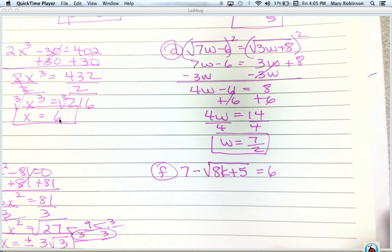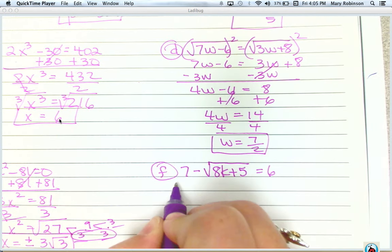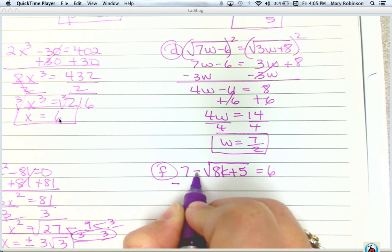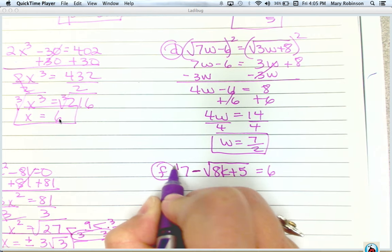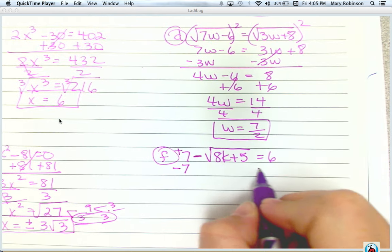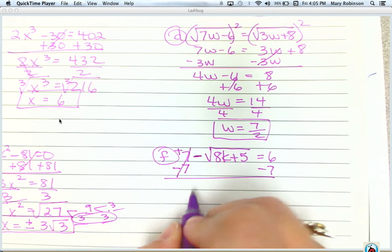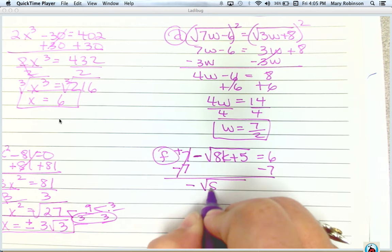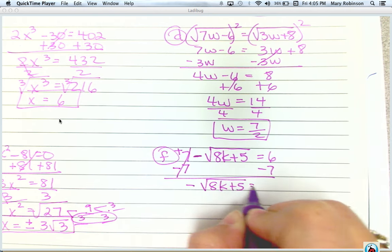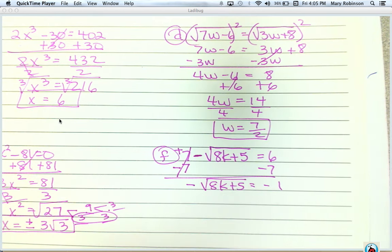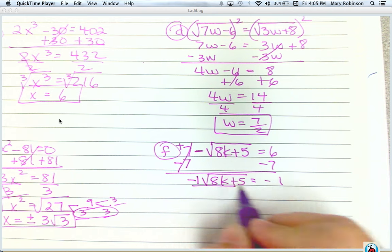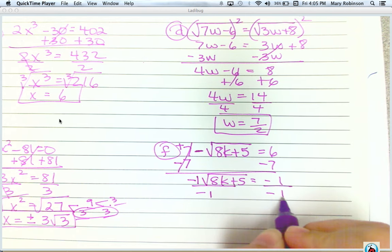Next, for f, we want to isolate this radical. 7 is not being subtracted. 7 is positive. To eliminate 7, we have to subtract 7 from both sides. So we get negative. The square root of 8k plus 5 is equal to negative 1. Remember, a negative in front really means a negative 1 in front. We isolate our radical by dividing both sides by a negative 1.